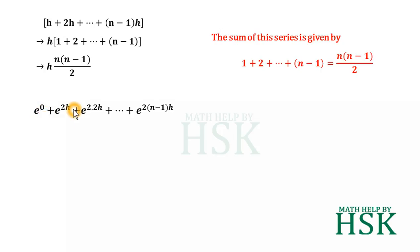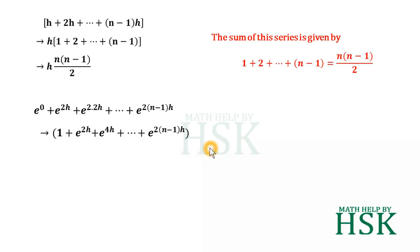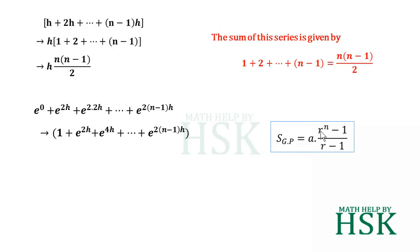The series e^0 + e^(2h) + e^(4h) + ... + e^(2(n-1)h) is a geometric progression, because each consecutive ratio equals e^(2h). Using the GP sum formula a(r^n - 1)/(r - 1), with n terms and common ratio e^(2h), this sum equals [e^(2h)^n - 1] / [e^(2h) - 1], which simplifies to [e^(2nh) - 1] / [e^(2h) - 1].